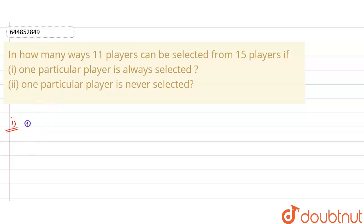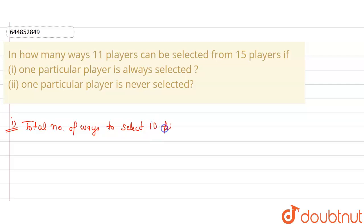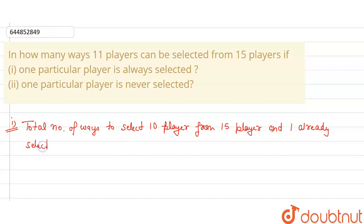So the total number of ways to select 10 players from 15 players, with one already selected, is equal to 14C10 into 1. That is, from 14 we have to select 10, and one is already selected. So 14C10 equals 14 factorial divided by 4 factorial into 10 factorial.